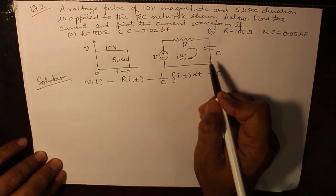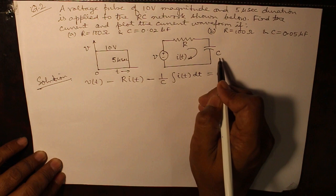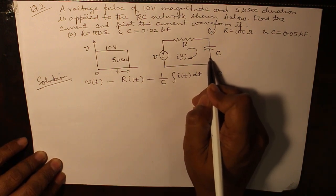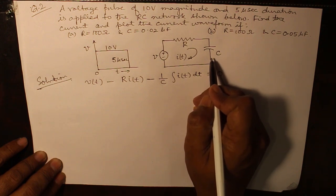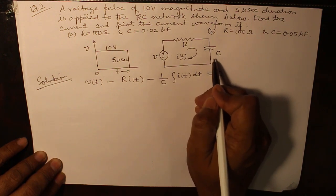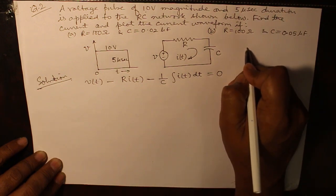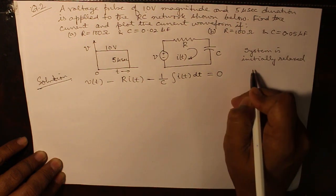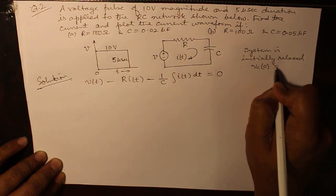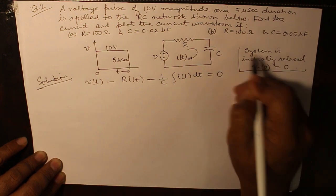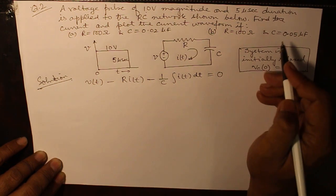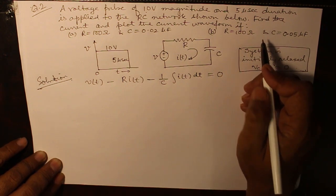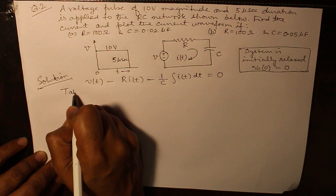Now, when we are writing an equation in i(t), if we had some initial condition, for example, if the capacitor had some voltage, we would have subtracted that voltage here. We would have put that voltage here and we would have subtracted according to the polarity. Here, the system is initially relaxed, means V_C(0) is zero. Whenever nothing is specified in the question, we are going to consider this. This is a question of Van Valkenburg. Taking Laplace transform on both the sides.